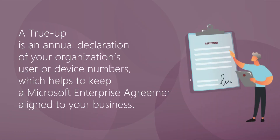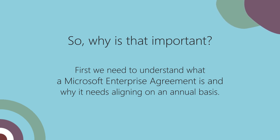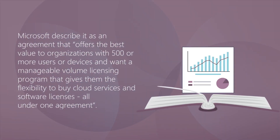A true-up is an annual declaration of your organization's user or device numbers that helps to keep a Microsoft Enterprise Agreement aligned to your business. Why is this important? Well, first we need to understand what a Microsoft Enterprise Agreement is and why it needs aligning on an annual basis. Microsoft describe it as an agreement that offers the best value to organizations with 500 or more users or devices and want a manageable volume licensing program that gives them the flexibility to buy cloud services and software licenses all under one agreement.